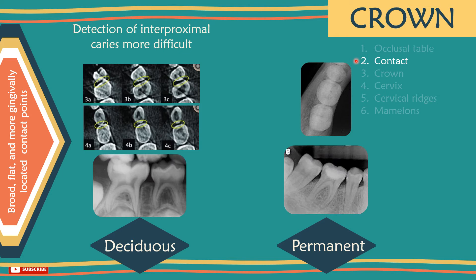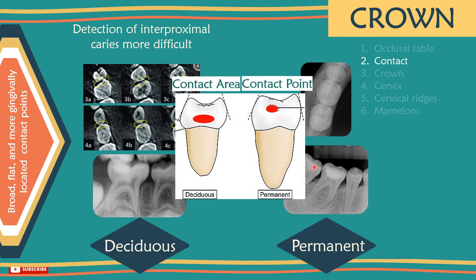Number 2 – Contact: primary teeth have broad, flat and more gingivally located contact points — or contact areas, since they are broad — whereas in permanent teeth the contact is a point that is narrower and more occlusally located. This makes detection of interproximal caries in primary dentition more difficult, and means that the divergence of the buccal and lingual walls towards the proximal surface in primary molars is necessary to ensure that the cavity margins are self-cleansing.